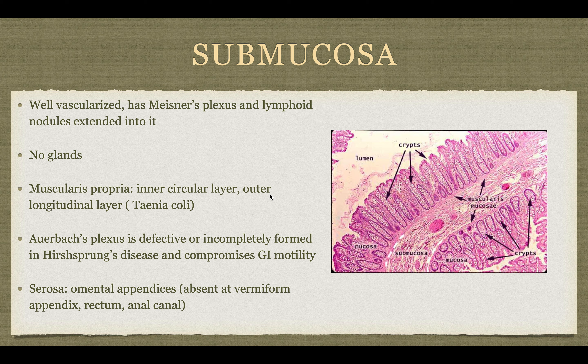The muscularis propria has an inner circular layer and an outer longitudinal layer, which is pretty typical. In certain diseases like Hirschsprung's disease, the outer plexus is defective or incompletely formed, compromising motility because there are no nerves to send the signal to contract the muscle.